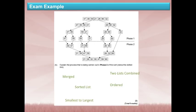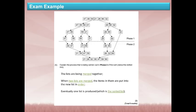Now phase two: 'Explain the process carried out in the second phase of this sorting algorithm.' Key words: merge, two lists combined, sorting, ordered, smallest to largest. Model answer: 'The lists are being merged together. When two lists are merged, the items are put into a new list which is in order. Eventually you'll end up with a fully sorted list.' Marks awarded for: merged, ordered, and sorted list — three marks guaranteed.